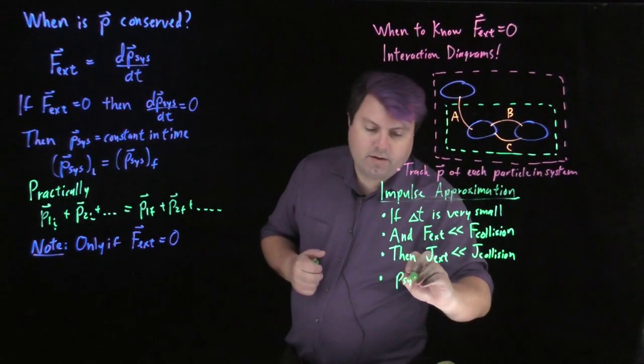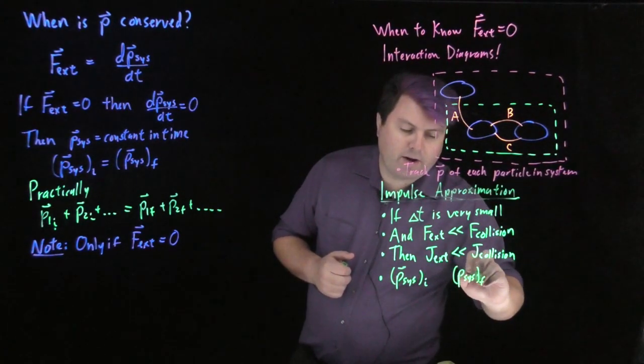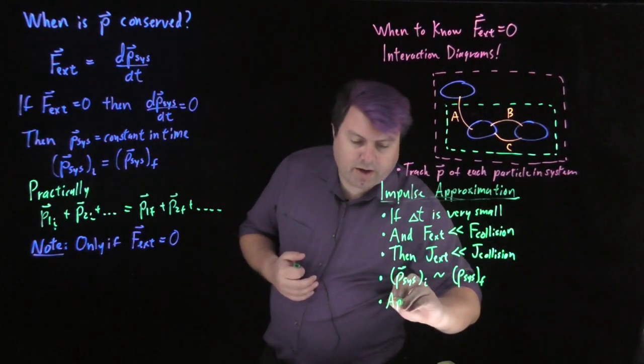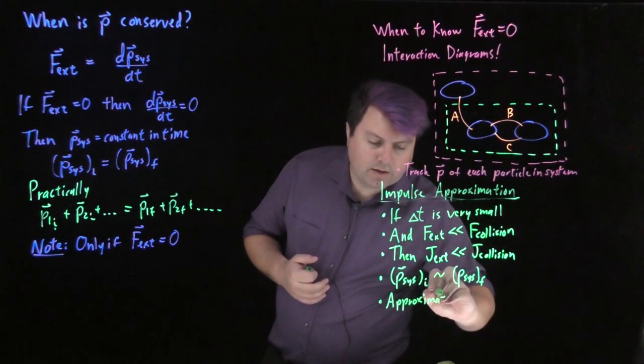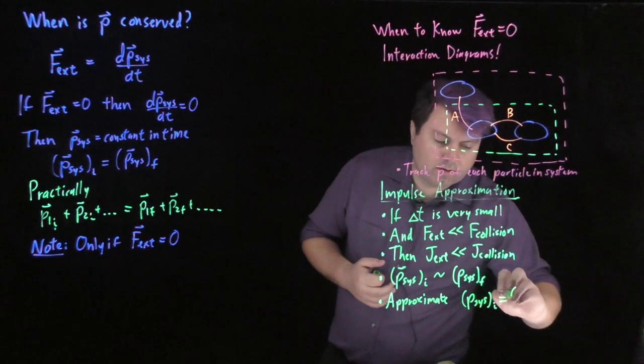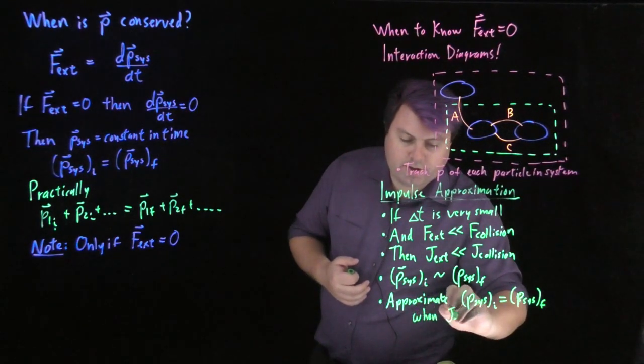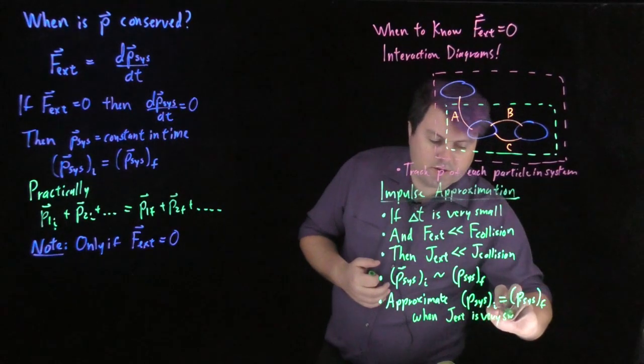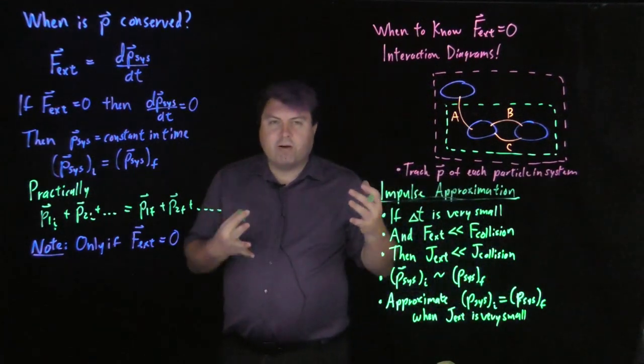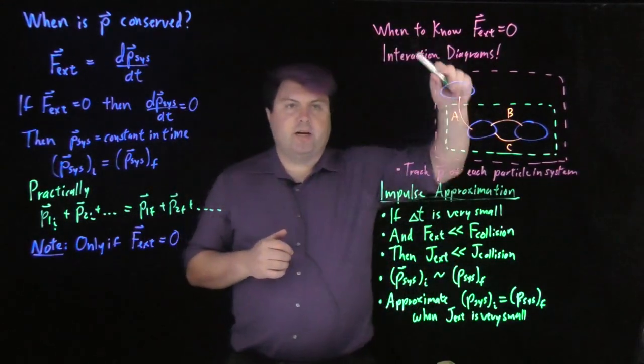And then, the change in our momentum initial compared to the momentum final, they will be roughly equal to each other. So, then we approximate that these two will actually be equal to each other when this j external is very small. So, this impulse, if this impulse is extremely small, then momentum is roughly conserved, approximately conserved. And so, we just say, it's close enough. So, that is how we talk about conservation of momentum, talk about system choices.